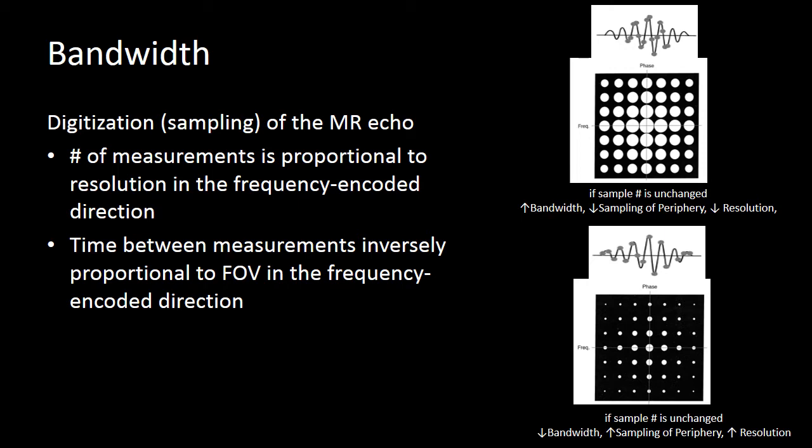If we're going to take the same number of samples but we decrease our bandwidth, we end up sampling more of our echo but we sample it less frequently. That causes an improvement in our resolution but a reduction in our field of view.